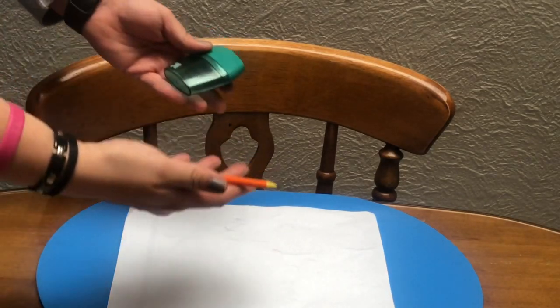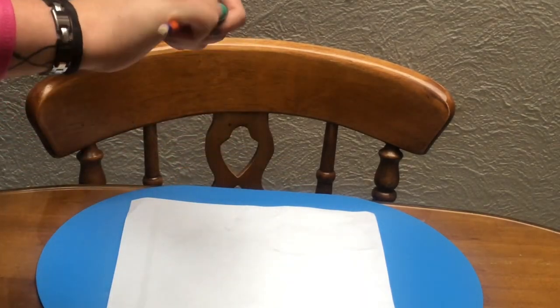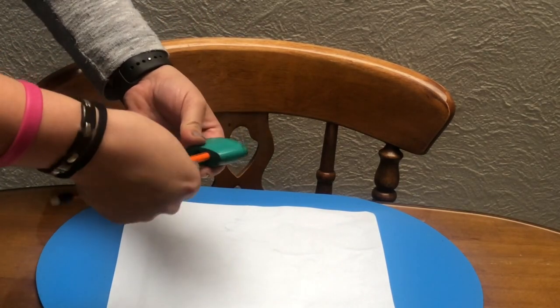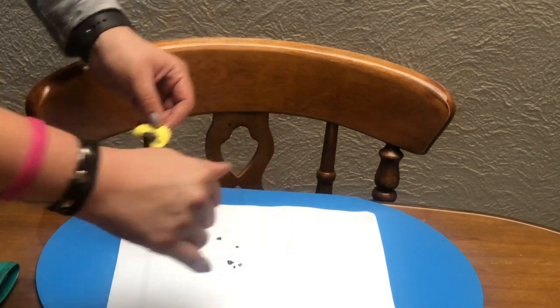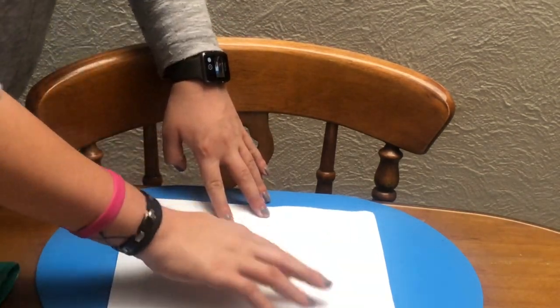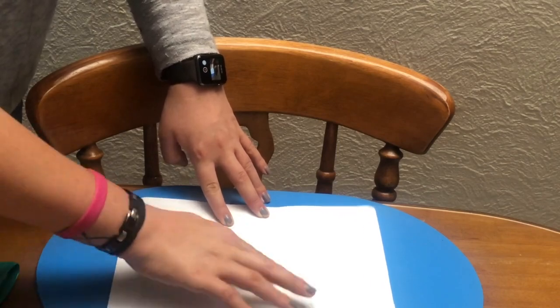To reveal the message, the first time I used a pencil and a sharpener. So sharpen your pencil and take away the wood of the pencil, just leave the charcoal. Rub the charcoal with your finger on the paper.